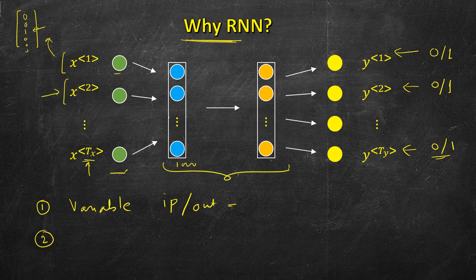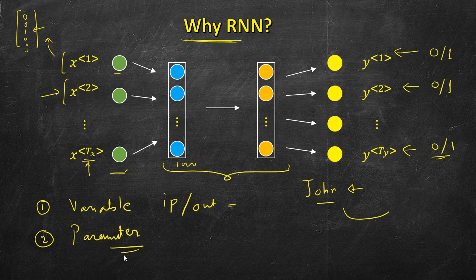The second reason is parameter sharing — similar to what you may know from convolutional neural networks. If the network learns to detect a certain word, for example 'John,' and if John appears as the first word in the sentence and is a name, then the same learning should apply when John appears anywhere else in the sentence. Features learned in one part of the network should be available in other parts. These are the two main reasons why we need a separate neural network model for sequence modeling tasks.